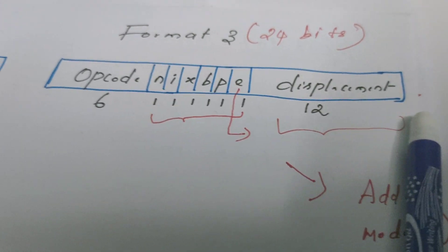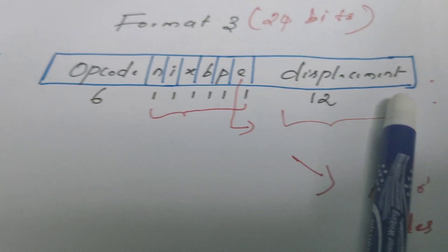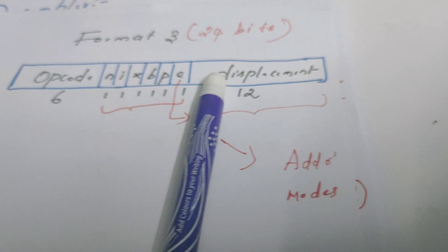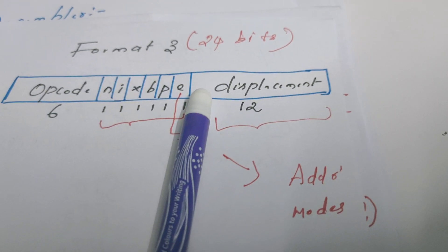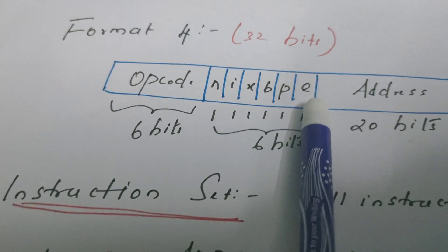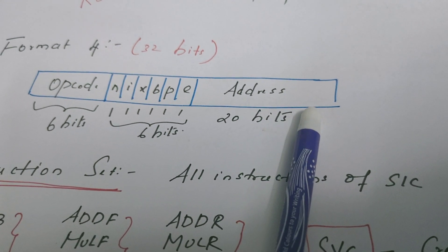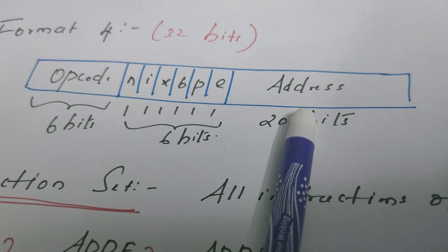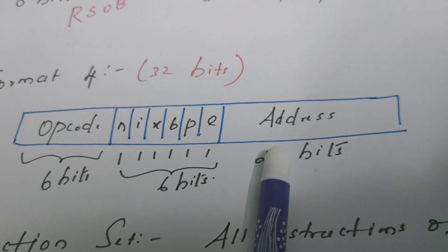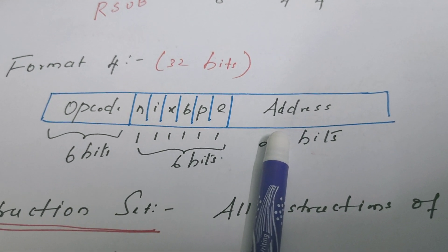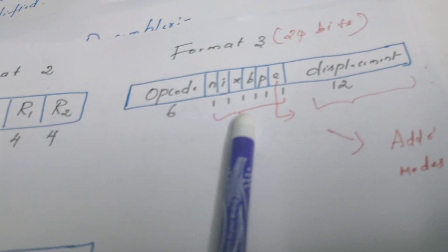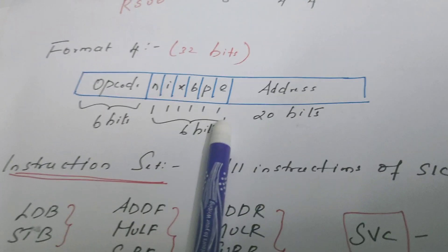Format 3 uses a displacement field — the displacement is the distance from the current instruction to a target memory location or label. This type of addressing is known as relative addressing. Format 4, on the other hand, supports absolute addressing: the exact address of the label or symbol is stored in the instruction. Wherever absolute addresses are used, those object codes need to be modified at the time of relocation. I will explain why format 3 does not require modification but format 4 does, with an example.